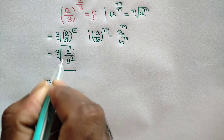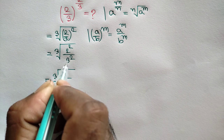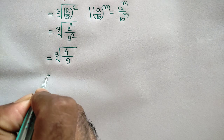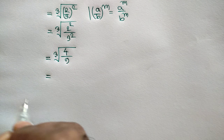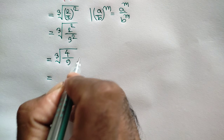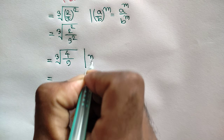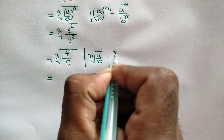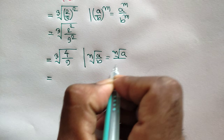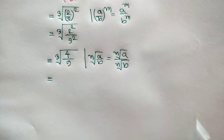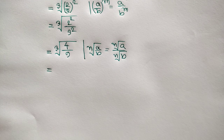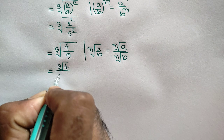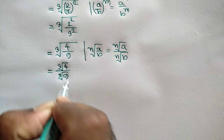Cube root of 2 squared is 4, over 3 squared is 9. We know that the nth root of (a/b) is equal to nth root of a over nth root of b. So we can write: cube root of 4 over cube root of 9.